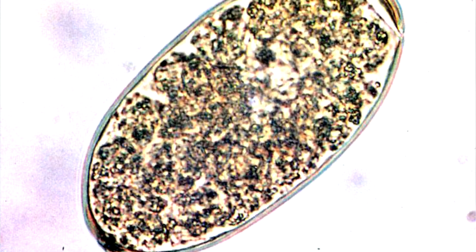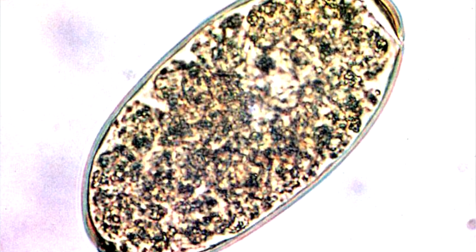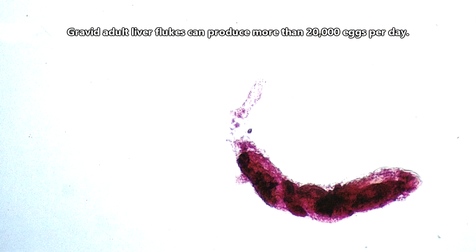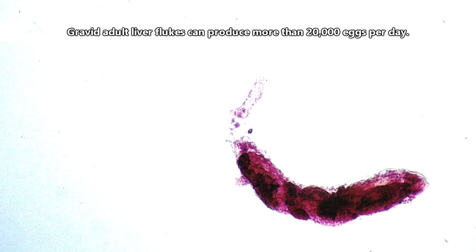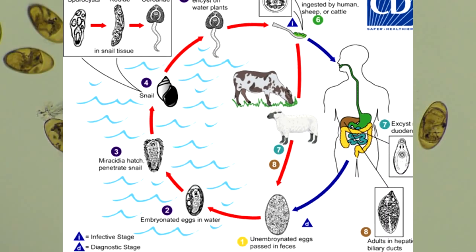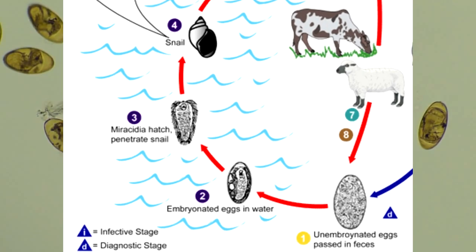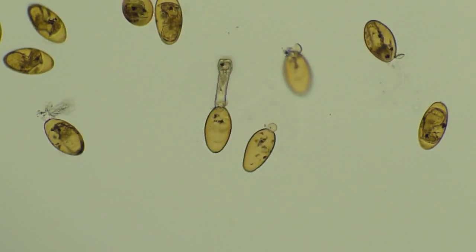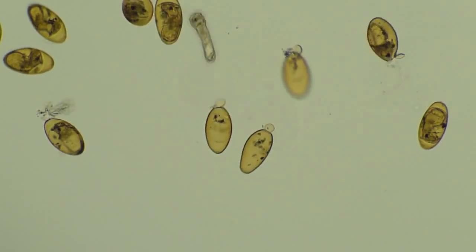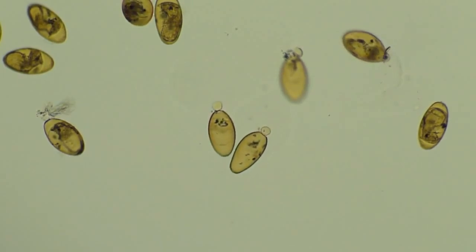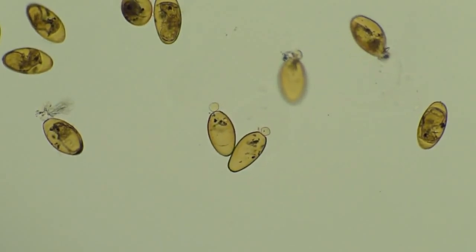Liver flukes begin life as an egg. The eggs are laid by adults and are excreted with the host's feces. The eggs hatch quickly into larvae, called miracidia, if they come into contact with water. This larval stage is free-living, meaning they can live outside of a host, but only for a short time as they require moisture.